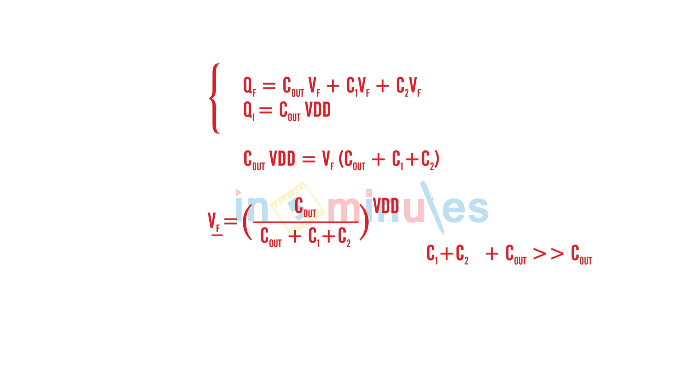So we'll just be evaluating both these equations. It is nothing but C_out VDD equal to VF. I'll take it common: C_out plus C1 plus C2. This tells me that final voltage VF will be equal to C_out VDD or I will put it in better words C_out upon C_out plus C1 plus C2. Now we know that C1 plus C2 plus C_out will surely be greater than C_out and hence my output voltage, the final output voltage would be less than VDD. This is nothing but the concept of charge sharing.